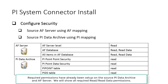Let's take a look at what the PI System Connector Service account needs permission on the source AF Server and PI Data Archive. On the source PI AF Server, the service account needs read access on the AF Server level, and read and read data for the AF database and all items in the AF database. For the source PI Data Archive, the service account needs read access to the PI Point Security, Data Security, PI Point Table, and PI DS Table.